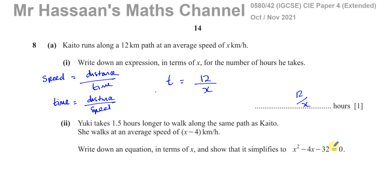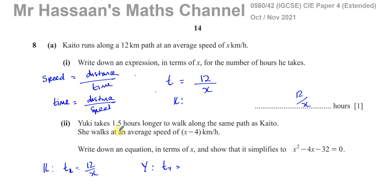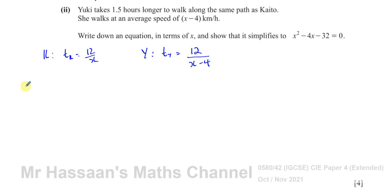For Cato, his time t_k equals 12/x. For Yuki, using the same idea, her average speed is x minus 4, and she takes 1.5 hours longer. So her time equals her distance — which is the same 12-kilometer path — divided by her speed of x minus 4.